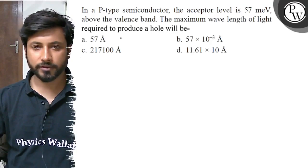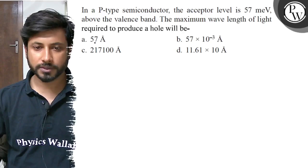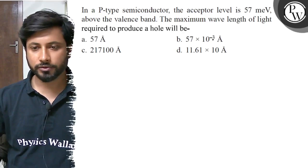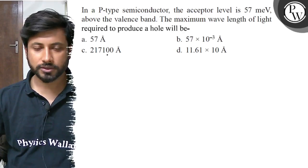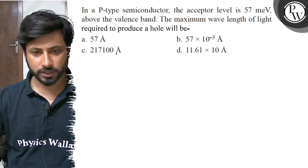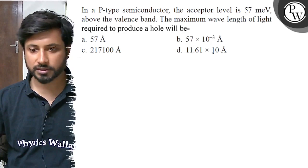The maximum wavelength of light required to produce a hole will be: Option A, 57 angstrom. Option B, 57 into 10 to the power minus 3 angstrom. Option C, 217100 angstrom. Option D, 11.61 into 10 angstrom.